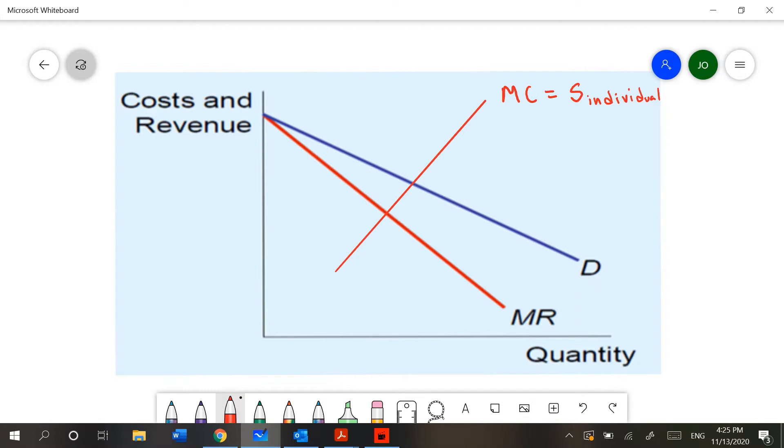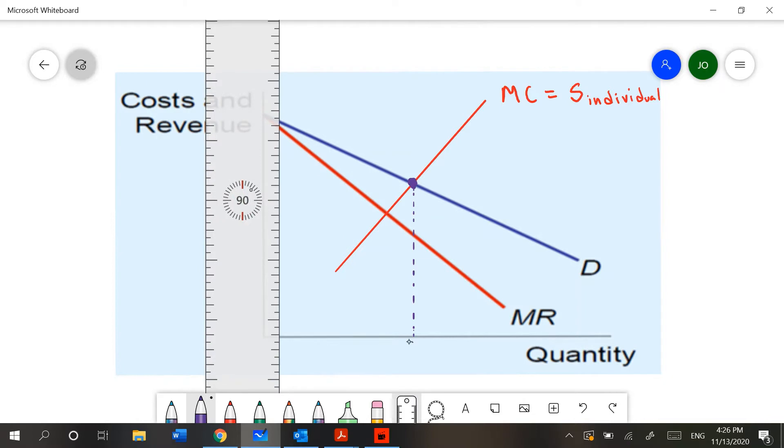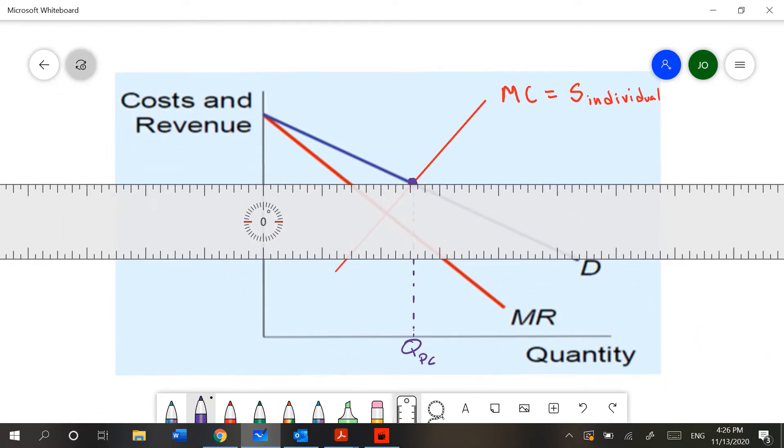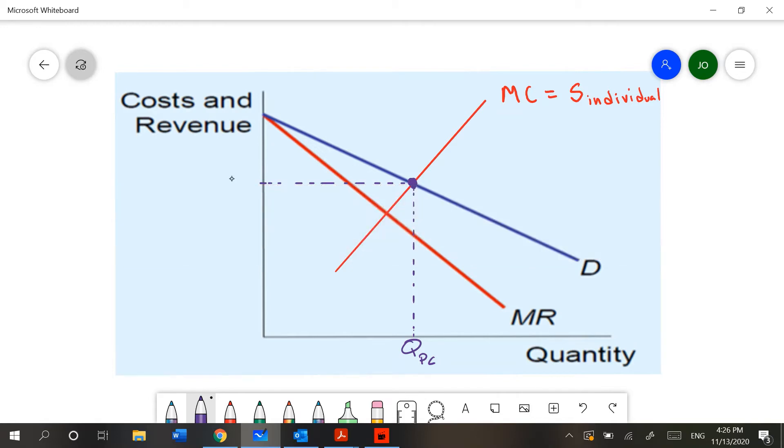If this was a perfectly competitive market, this means that my equilibrium between my demand and my supply would tell me what the market price and the market quantity are. So, under a perfectly competitive structure, this is my quantity and I will label that QPC. I can also know my price and I will label that price under perfect competition, PC.